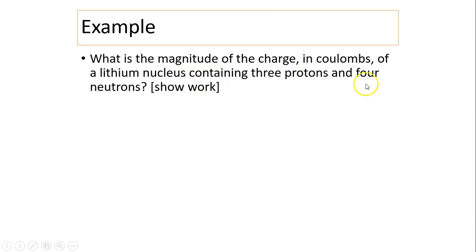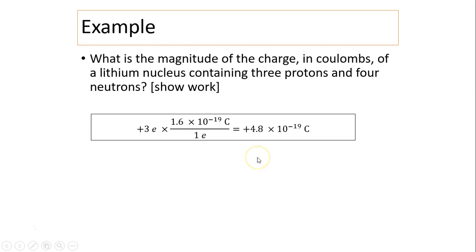Last example: what is the magnitude of charge in coulombs of a lithium nucleus containing 3 protons and 4 neutrons? Neutrons have no charge; protons have elementary charge. So 3 elementary charges times 1.6×10⁻¹⁹ coulombs each gives positive 4.8×10⁻¹⁹ coulombs. The question asks for magnitude, so the positive sign is noted but not strictly required.